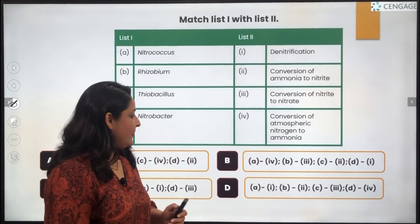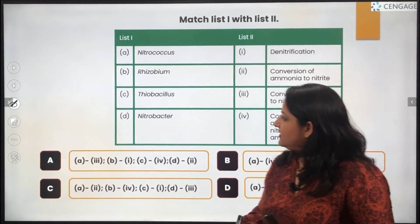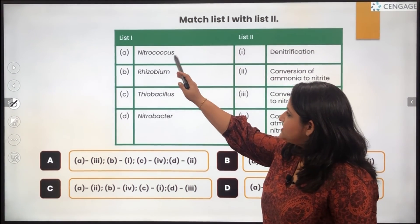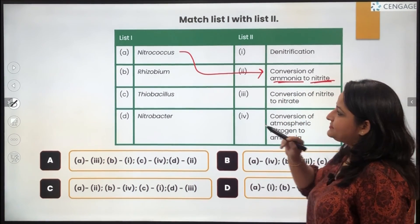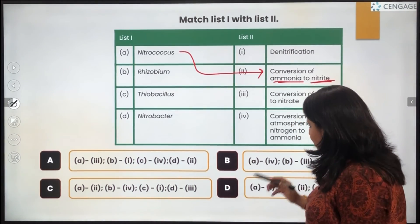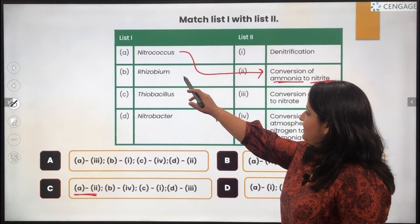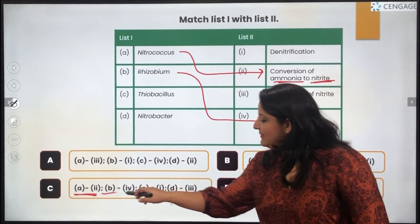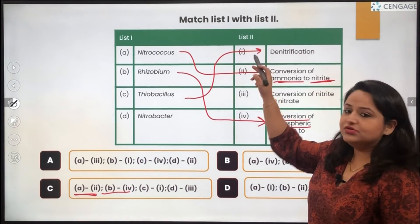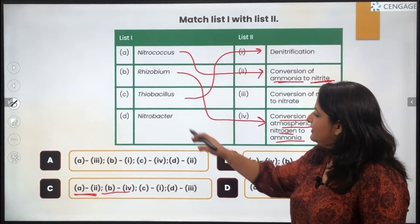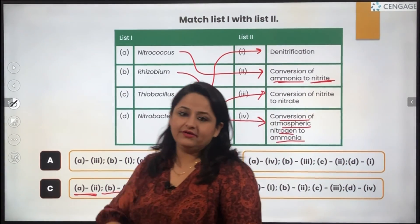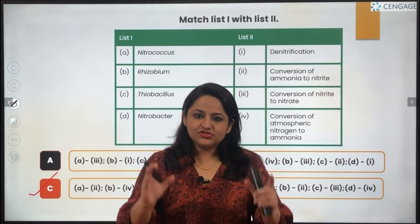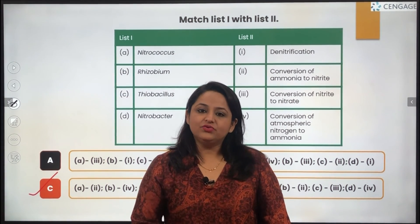The final question matches bacteria with the processes they facilitate in the nitrogen cycle. Nitrococcus helps in denitrification, so A matches with 2. Rhizobium converts atmospheric nitrogen into ammonia, so B matches with 4. Thiobacillus helps in denitrification, and Nitrobacter helps in the conversion of nitrite to nitrate. Looking at all these matchings, only option C is correct. These were some of the questions asked in the NEET 2020-2021 question paper.